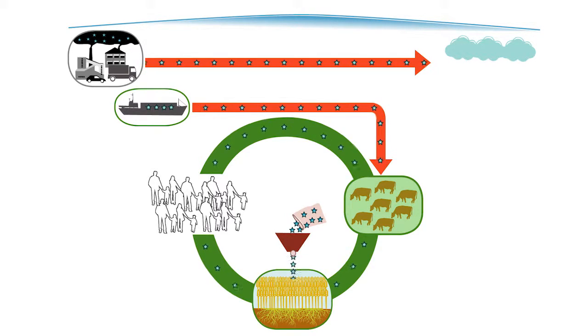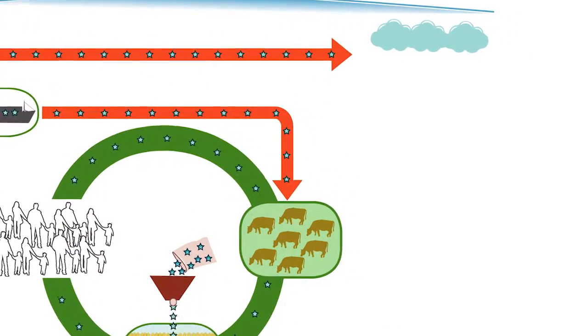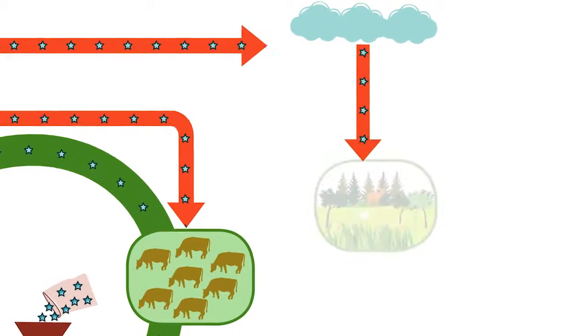It went from essential ingredient for life to pollutant. Harmful nitrogen compounds caused by combustion enter the air and cause health problems. Sooner or later, they end up in the soil of ecosystems.